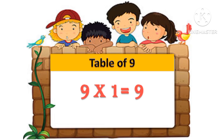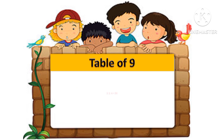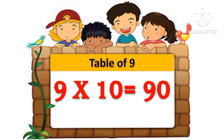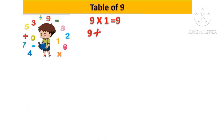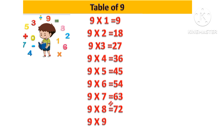Table of 9: 9 one's are 9, 9 two's are 18, 9 three's are 27, 9 four's are 36, 9 five's are 45, 9 six's are 54, 9 seven's are 63, 9 eight's are 72, 9 nine's are 81, 9 ten's are 90. Let's revise: 9 one's are 9, 9 two's are 18, 9 three's are 27, 9 four's are 36, 9 five's are 45, 9 six's are 54, 9 seven's are 63, 9 eight's are 72, 9 nine's are 81, 9 ten's are 90.